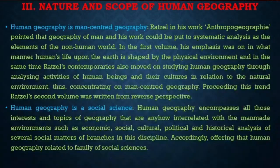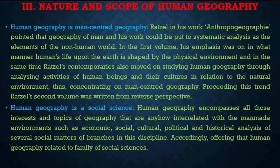Second, Human Geography is man-centered geography. Friedrich Ratzel, in his work Anthropogeographie, pointed out that the geography of man and his work would be put to systematic analysis as elements of the natural world. In his first volume, his emphasis was on the manner in which the life of human beings upon the earth is shaped by the natural environment. At the same time, Friedrich Ratzel's contemporaries also moved on to study human geography by analyzing activities of human beings and their culture in relation to the physical environment, thus concentrating on man-centered geography. Friedrich Ratzel's second volume was written from a different perspective.